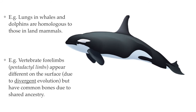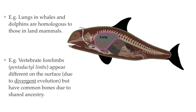For example, besides the four limb bones that are shared with all mammals, whales and other cetaceans like dolphins also have lungs, just like all mammals do. Despite the fact that they live exclusively in the oceans, whales breathe air through the lungs that they inherited from their land-dwelling ancestors.